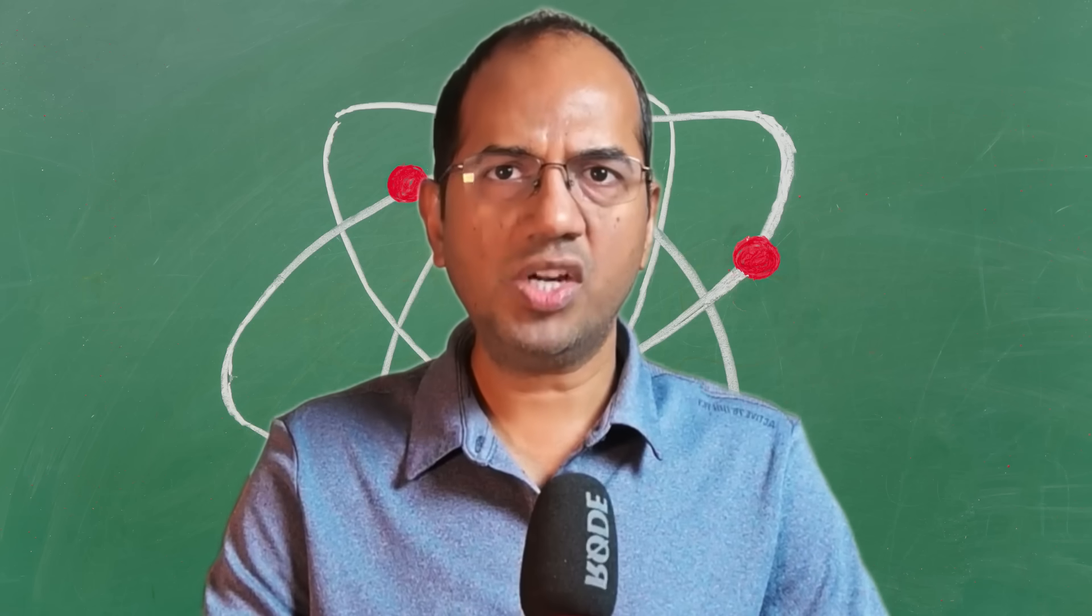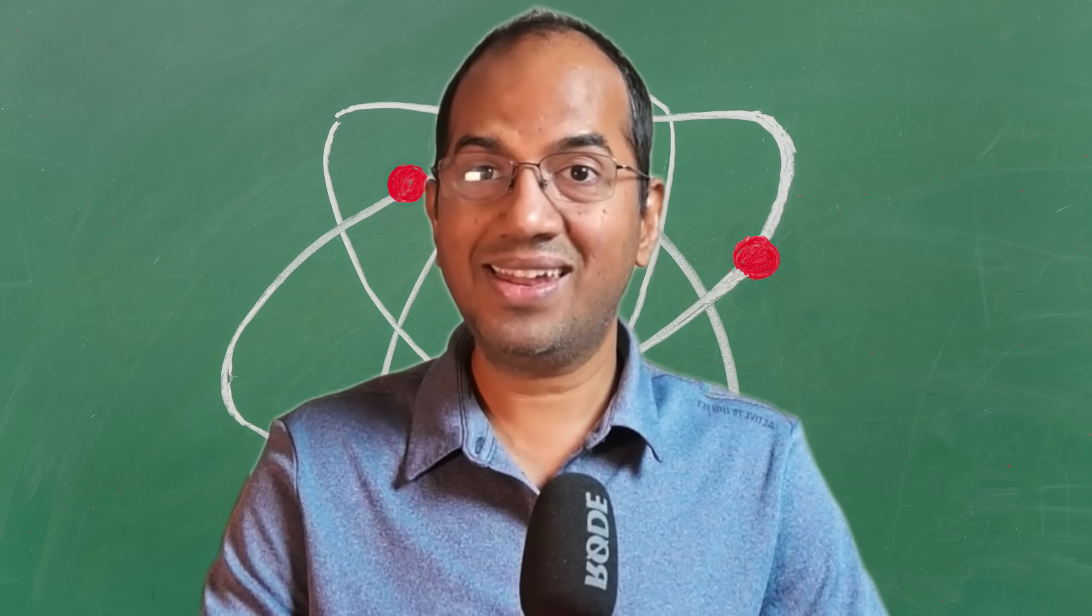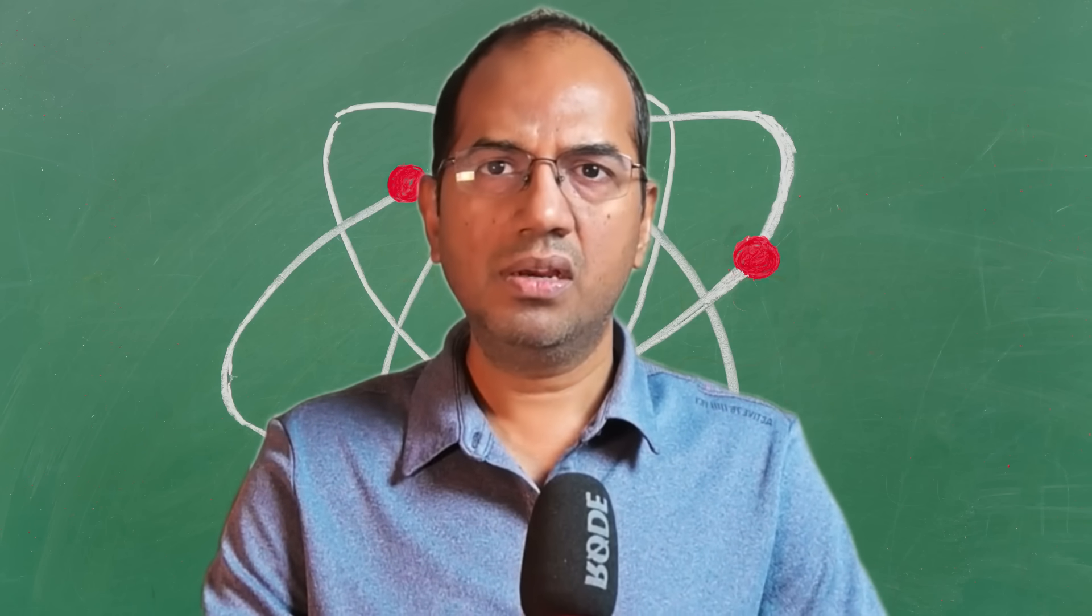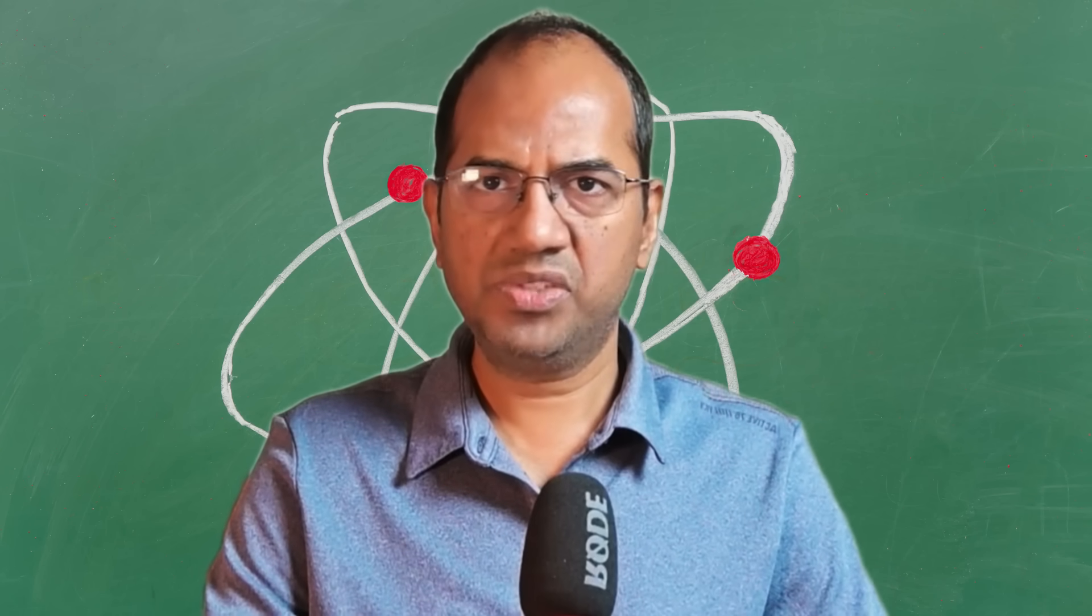Imagine a clock. Not just any clock. This is a light clock, the simplest one you can imagine. It's just two mirrors facing each other with a single particle of light, a photon, bouncing between them. Every time the photon hits the bottom mirror, we count it as one tick. Simple enough.